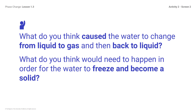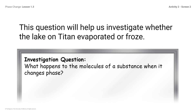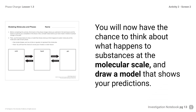What do you think caused the water to change from liquid to gas and then back to liquid? What would need to happen for the water to freeze and become a solid? This question will help us investigate whether the lake on Titan evaporated or froze. Investigation question: What happens to the molecules of a substance when it changes phase? You have thought a lot about the macroscale appearance of phase changes today and in the previous lesson. Now we will investigate phases at the molecular scale.